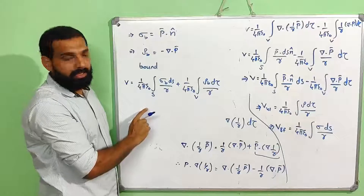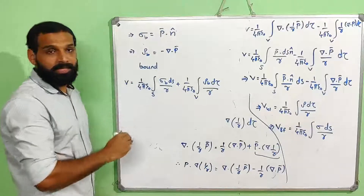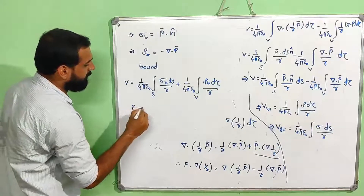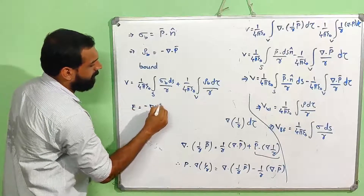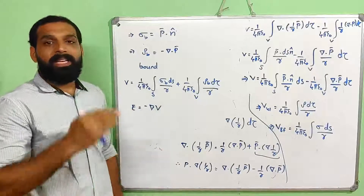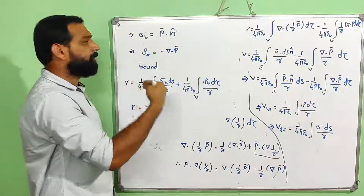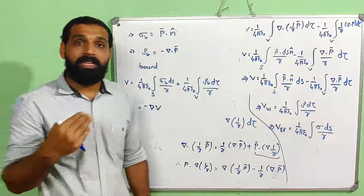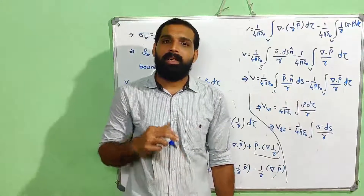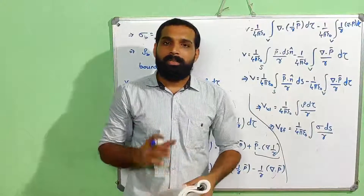Therefore the potential due to a polarized object is given as 1 by 4 pi epsilon 0 integral sigma-b dS by R plus integral rho-b d-tau by R. From this equation, the electric field can be found as the negative gradient of potential. Thank you all.